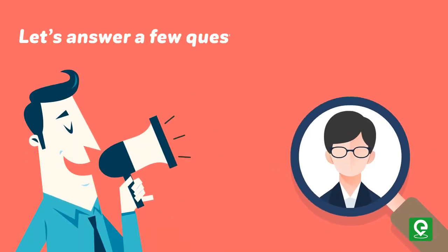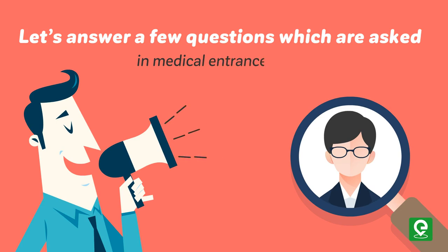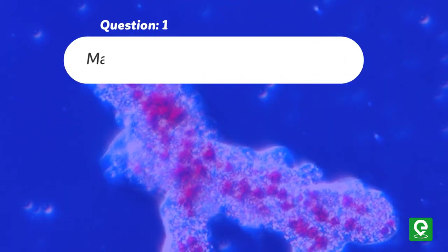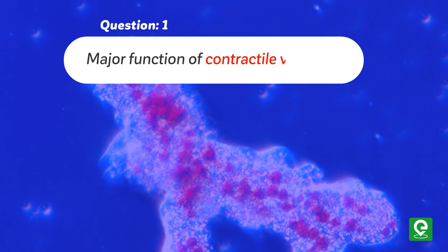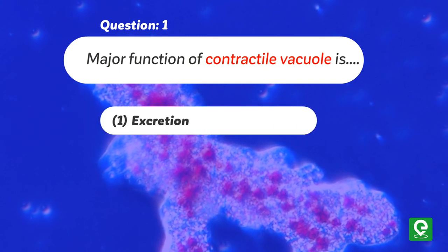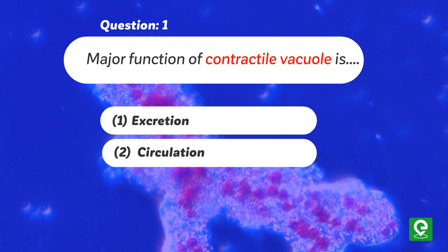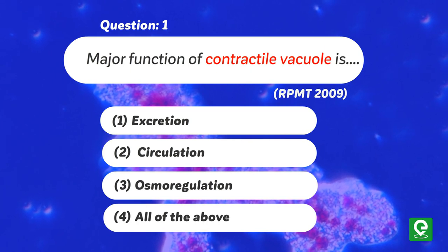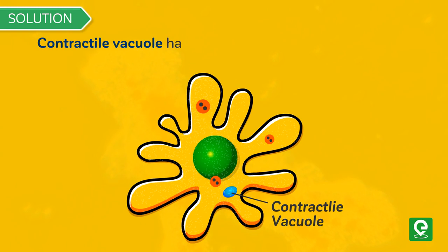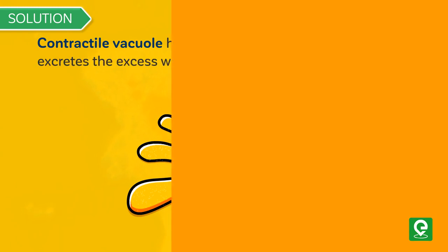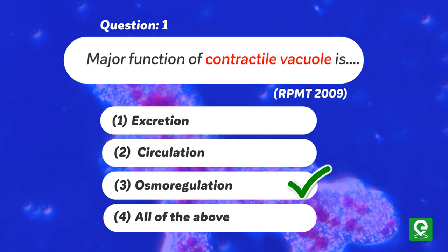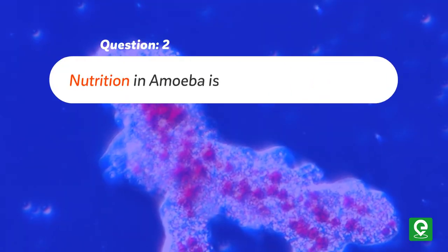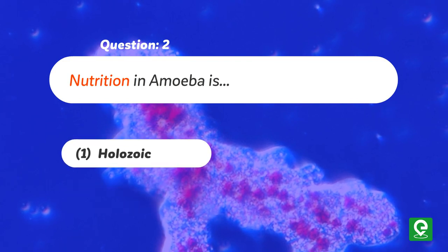Question 1: What is the major function of a contractile vacuole? Options: 1) Excretion, 2) Circulation, 3) Osmoregulation, or 4) All of the above. This question was asked in Rajasthan PMT 2009. Solution: The contractile vacuole has the function of osmoregulation — it excretes excess water from the body. Hence option 3 is correct.